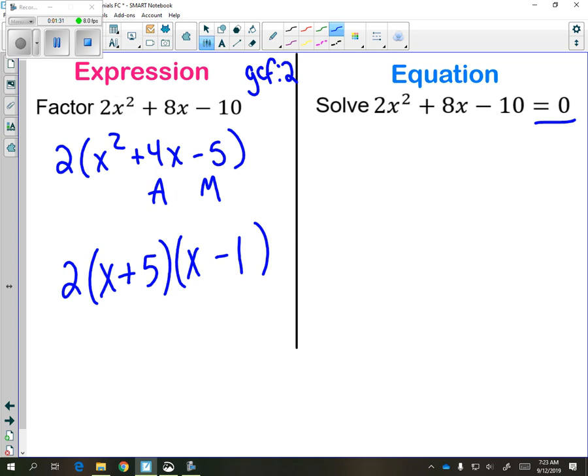On the right, we're going to start by doing the same thing. We're going to start solving the equation by factoring. And we already know that this trinomial is going to factor into 2 times x plus 5 times x minus 1.